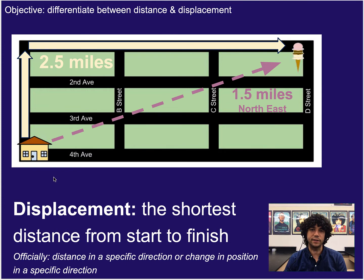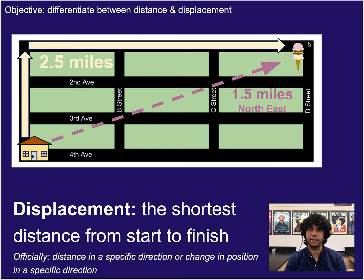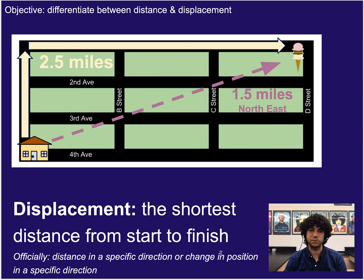Displacement, on the other hand, is the shortest distance from start to finish, regardless of what path was actually taken. So we don't care if you meandered about, went in circles ten times, and then ended up over here. What matters is where did you start, where did you finish, and what is the shortest length from start to finish. And it includes direction — so officially it's distance in a specific direction, or a change in position in a specific direction.